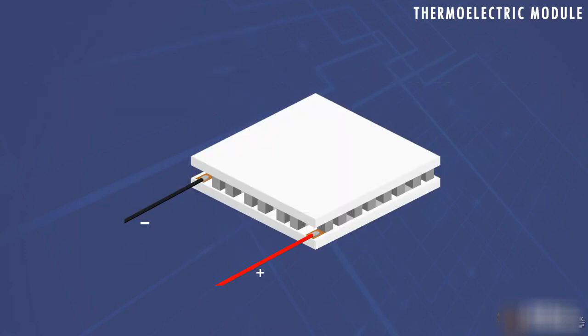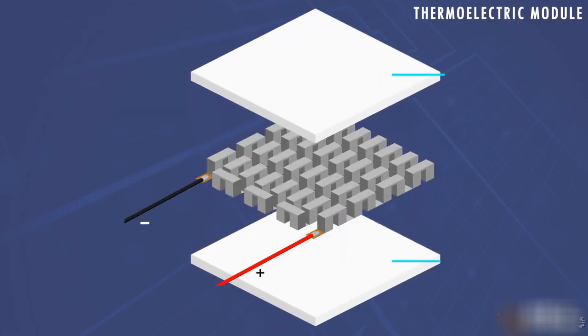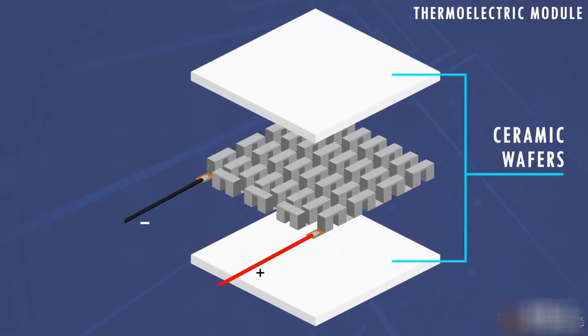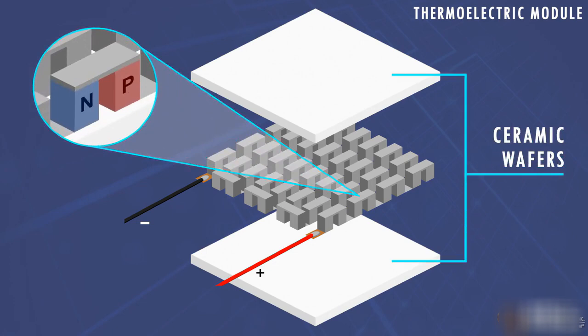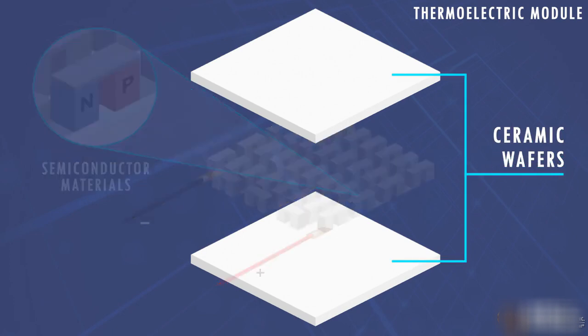A thermoelectric module consists of two ceramic wafers with a series of N and P semiconductors in between them. The ceramic wafers add rigidity and provide electrical insulation for the module.